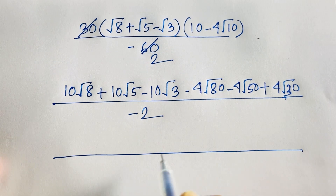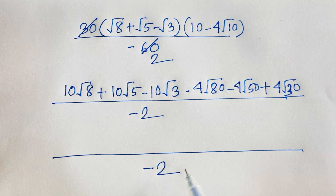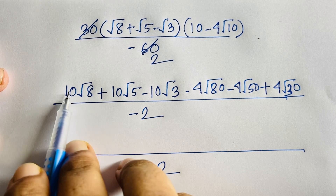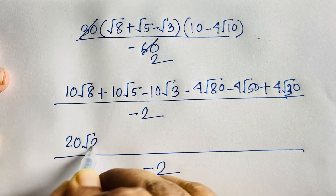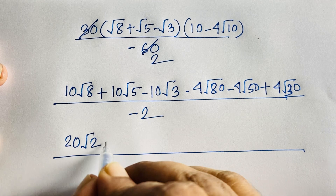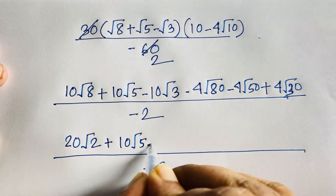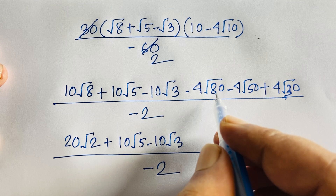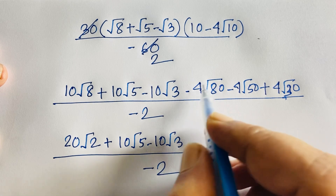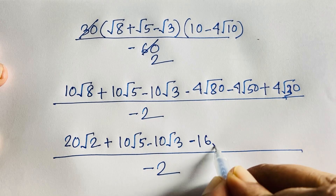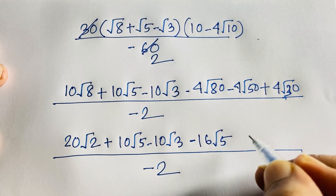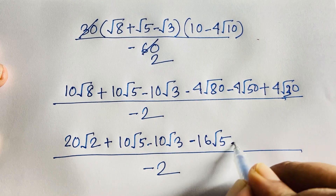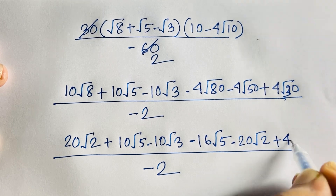Simplifying: √8 = √(4×2) = 2√2, so 10√8 = 20√2. For 4√80: √80 = √(16×5) = 4√5, so 4√80 = 16√5. For 4√50: √50 = √(25×2) = 5√2, so 4√50 = 20√2. The 20√2 terms cancel. We have: 10√5 − 10√3 − 16√5 + 4√30.